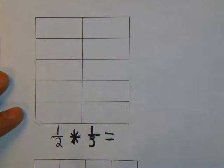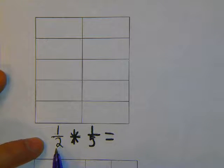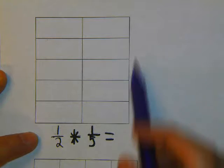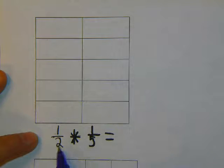We're going to represent multiplying fractions today. We're going to start with 1 half times 1 fifth. We have our box set up the first way.